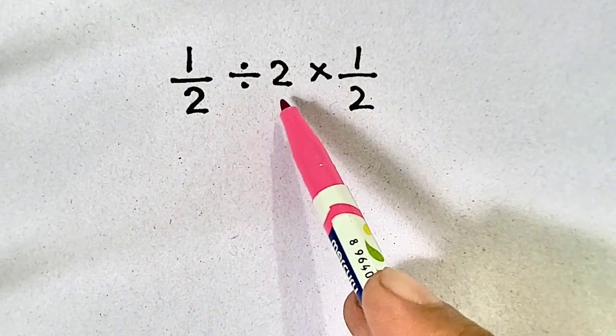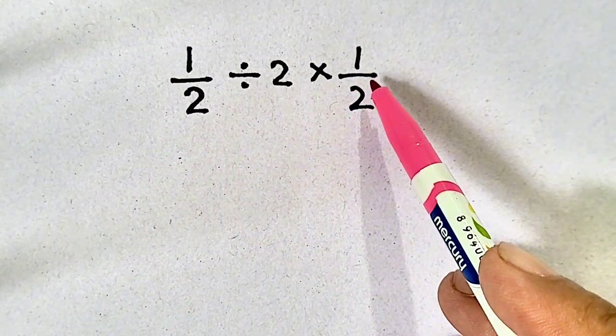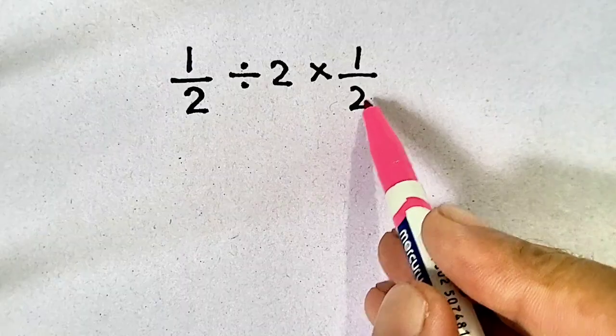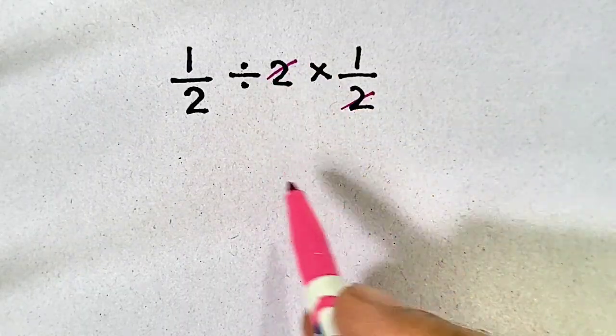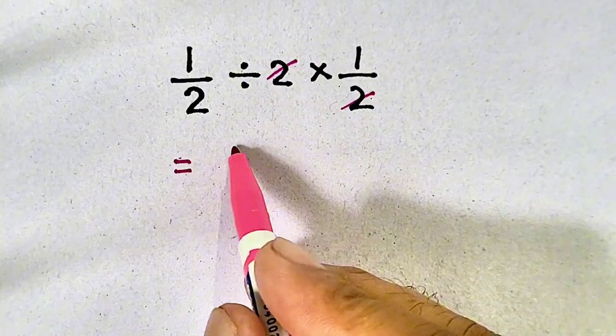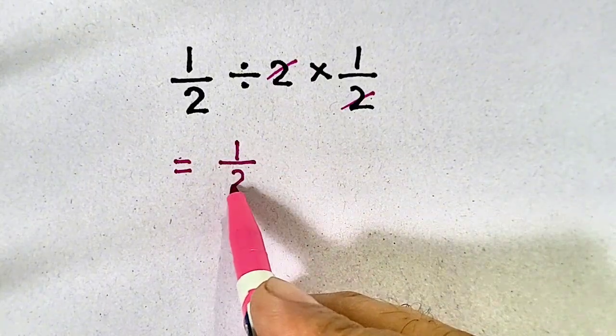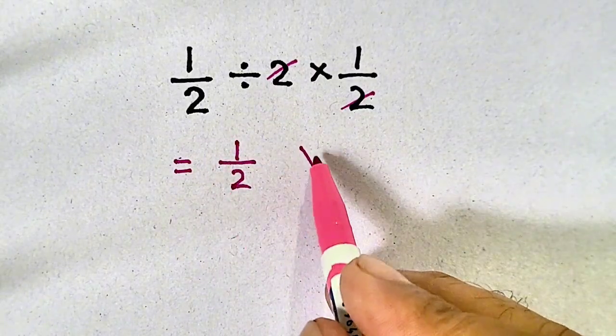1/2 divided by 2 times 1/2. Most students cancel the 2 and the 1/2, and their answer will be equal to 1/2. But it is wrong.